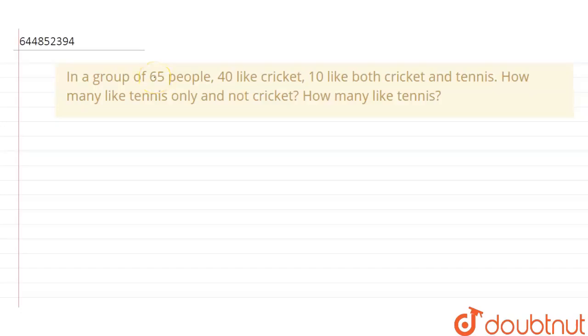In a group of 65 people, 40 like cricket. So the number of people who like cricket are 40. And 10 like both cricket and tennis, so we have n(C∩T) where T is tennis equals 10. And it is a group of 65 people, so n(C∪T) is 65.